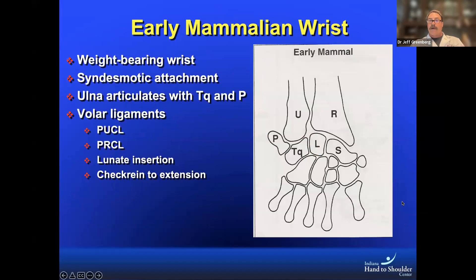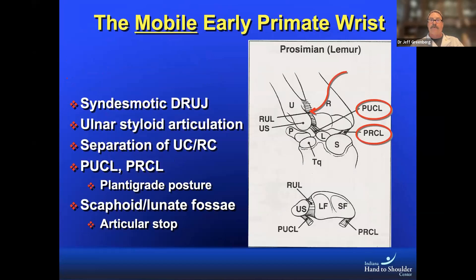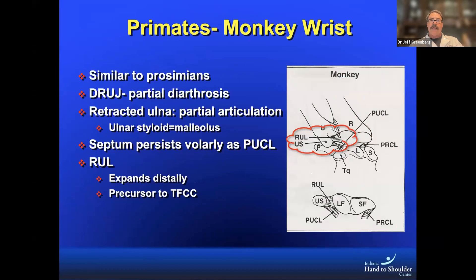When we move further to the early mammalian wrist, we start to see changes that make us think about the current distoradial joint. This is mostly based on weight-bearing activities that early mammals did. We see the distoradial joint becoming more of a syndesmosis with the ulna recessing and articulating with the triquetrum and pisiform. In the more advanced prosimians, we see a true syndesmosis with the ulnar styloid only articulating with the joint, and initial evidence of both the palmar ulnar and palmar radial collateral ligaments with the development of a distinct fossa for the scaphoid and lunate.